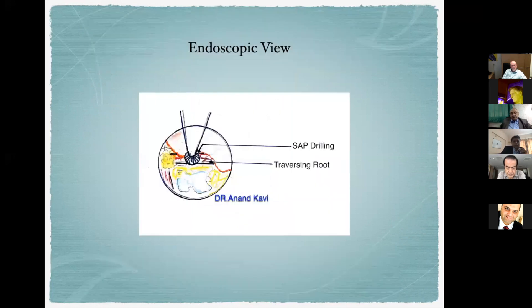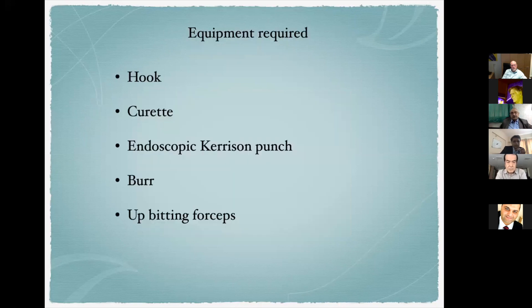A schematic diagram shows how we go through the foraminal zone, cut the tip of the superior articular process without damaging the articular part of the joint, remove hypertrophic tissue in the foramen, and visualize the free exiting and traversing roots. The equipment required is minimal and not high-cost: just a hook, curette, endoscopic Kerrison forceps, a burr, and an upbiting forcep.